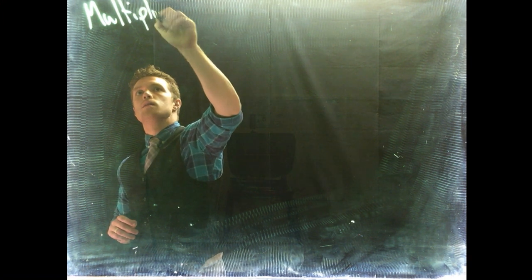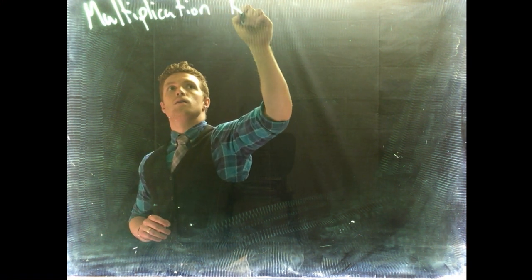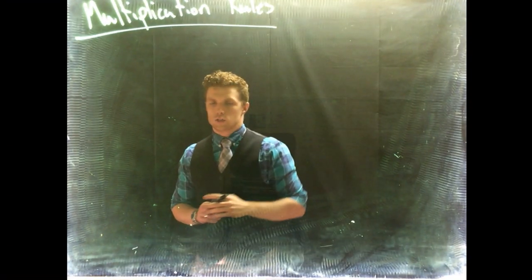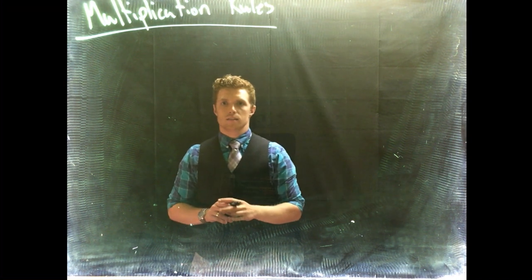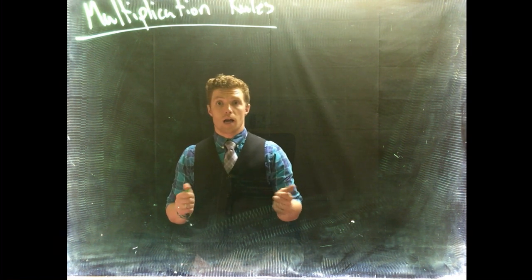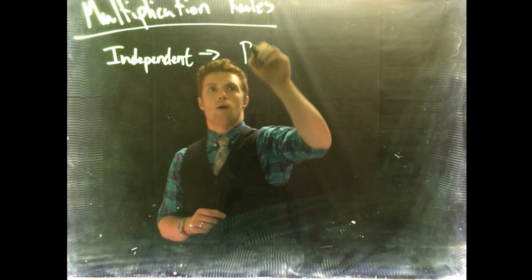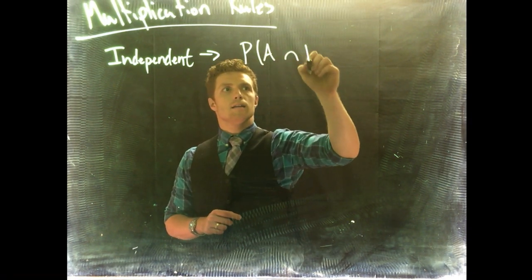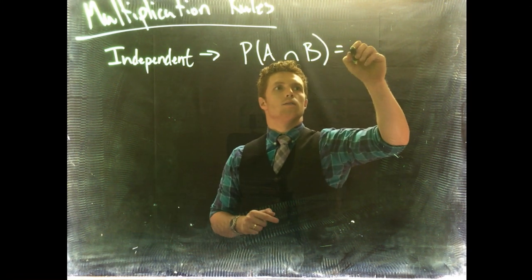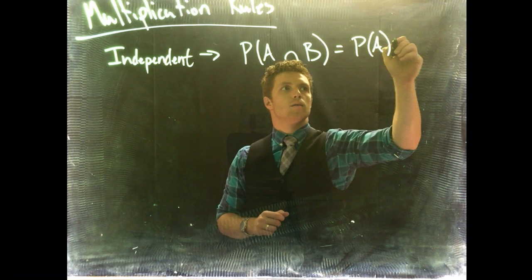Now that we've talked about independent events, we can go ahead and discuss our multiplication rules. For our multiplication rules, we have to be able to state whether or not an event is independent or not. If independent, then the multiplication rule is that the probability of A and B is equal to the probability of A multiplied by the probability of B.